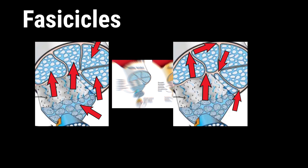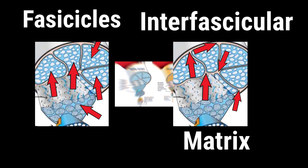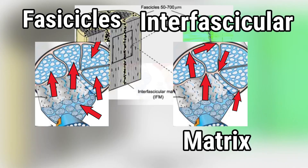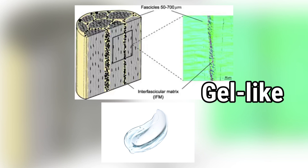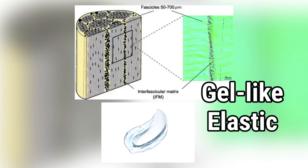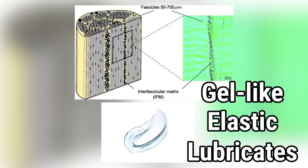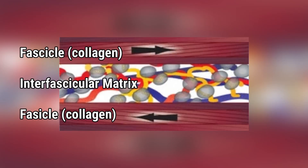Look at the fascicles and the area outside of the fascicles - this is the interfascicular matrix. It's a gel-like area, it's high in elastin so it's elastic, and it's high in lubricant so it lubricates. This area is thought to allow sliding and rotating of the fascicles, which protects them from getting overloaded.